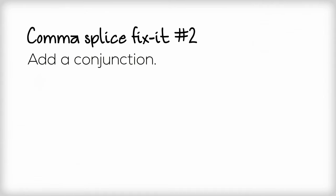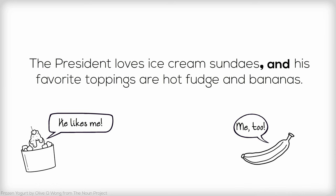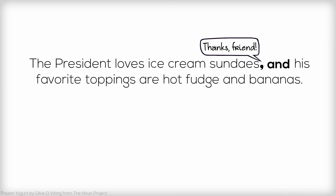Comma splice fix number two: Add a conjunction. Another way to fix a comma splice is to add a conjunction, which is a word that connects two related items, usually clauses and phrases, like and, or, but, and so. Place the conjunction after the comma to properly join the two phrases. The president loves ice cream sundaes, and his favorite toppings are hot fudge and bananas. In this example, the little comma has his friend the conjunction to help support the sentence, which, as we know, consists of two independent clauses.